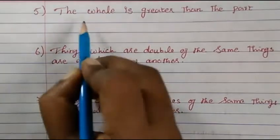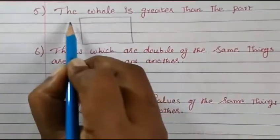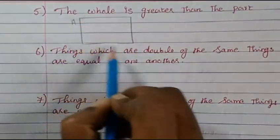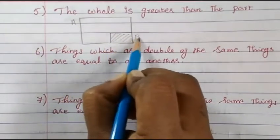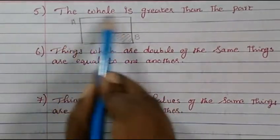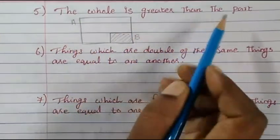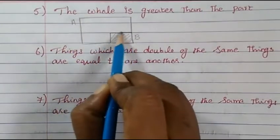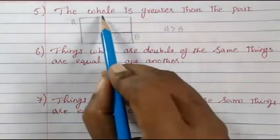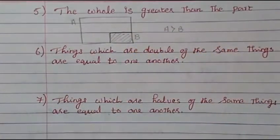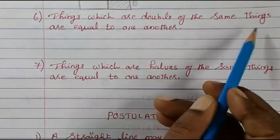The fifth axiom: the whole is greater than the part. For example, consider a big rectangle A and a smaller rectangle B inside it. The whole rectangle A is greater than the part B. So the whole is always greater than the part.